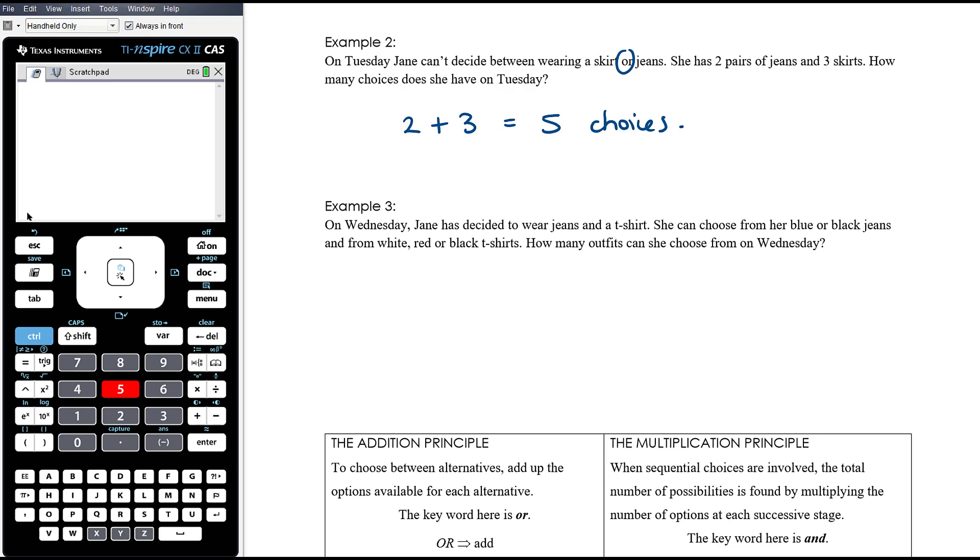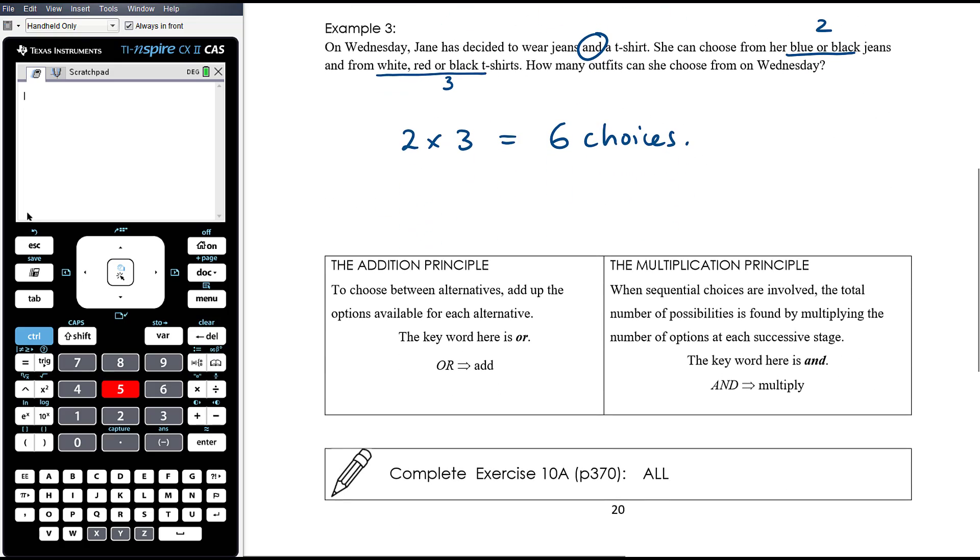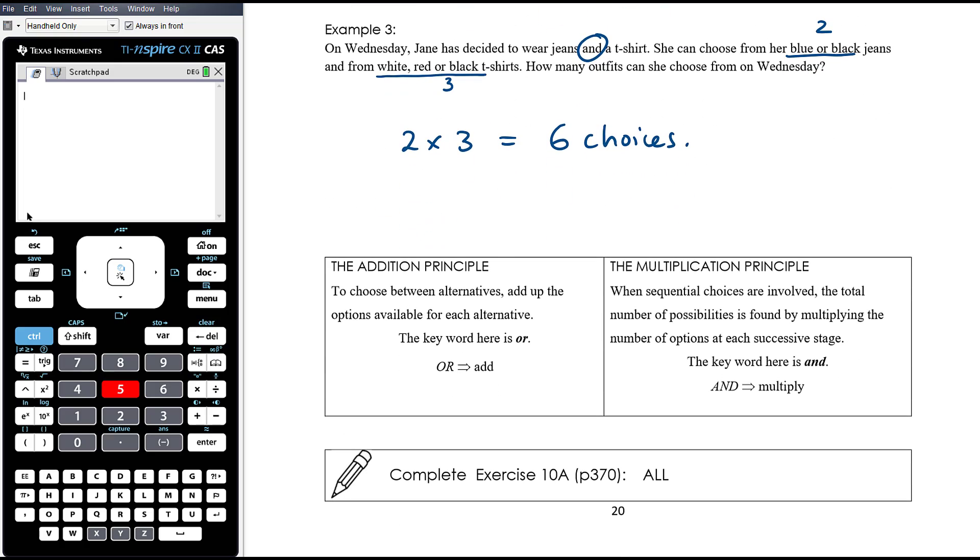On Wednesday Jane has decided to wear jeans and a t-shirt. She can choose from her blue or black jeans and from white, red, or black t-shirts. How many outfits can she choose from on Wednesday? So this time she's got two choices of jeans and she's got three choices of t-shirts. It's not just about adding together 2 and 3 because she's not going to wear jeans or a t-shirt—she's going to wear jeans and a t-shirt. Which means if she chooses the blue jeans she's got three t-shirt choices, that's three outfits, or she could choose the black jeans with three t-shirt choices, that's another three outfits. So it's six outfits in total. What we're actually doing is 2 times 3 to get six choices.